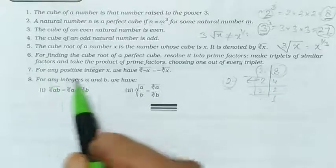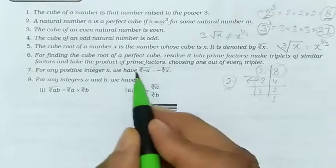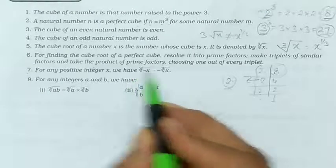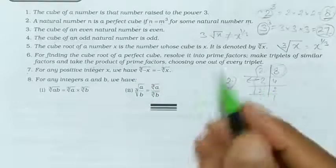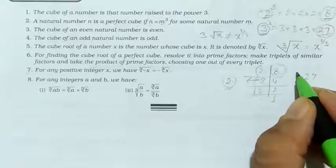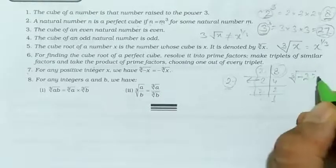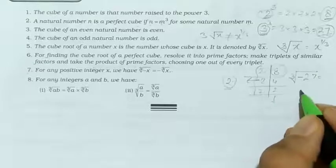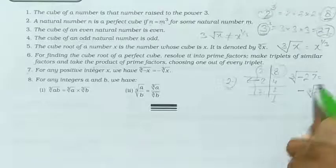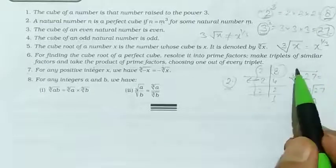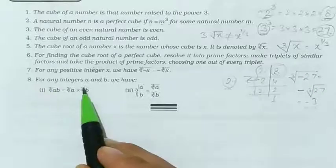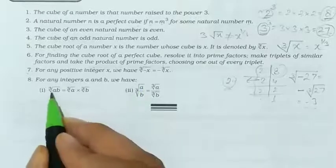Seventh point: for any positive integer x, the cube root of minus x is minus of cube root of x. So if you have to find the cube root of −27, it will be minus of cube root of 27, which is minus 3. For negative quantities, the cube root is always negative.